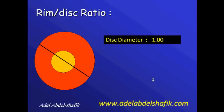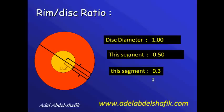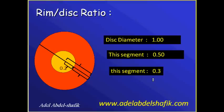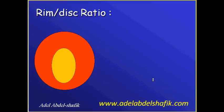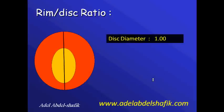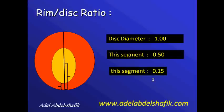If in this meridian the disc is 1 — so this half of the diameter is 0.5 — then the neural tissue is 0.3 and the cup in this meridian is 0.2, so the rim disc ratio on this side is 0.3. In another example, the disc is 1, this side is 0.5, and the neural tissue here is 0.15, so the neural rim in this segment is 0.15.